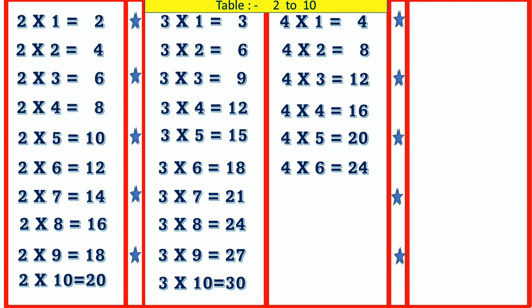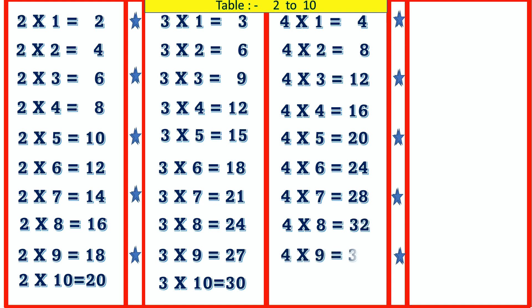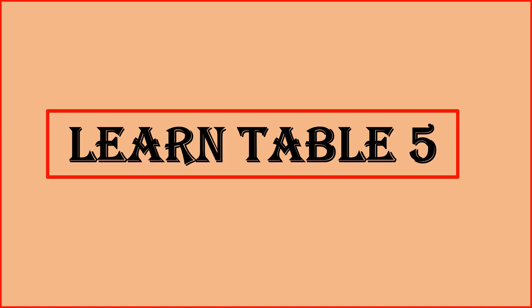4 7's are 28, 4 8's are 32, 4 9's are 36, 4 10's are 40. Learn table 5.